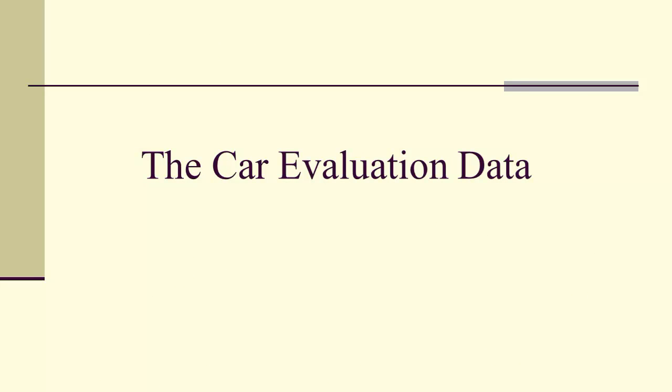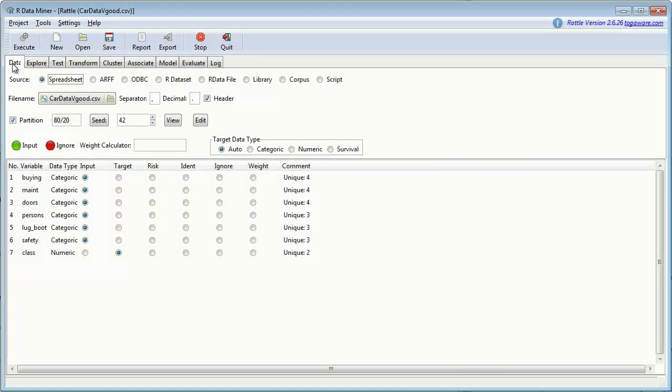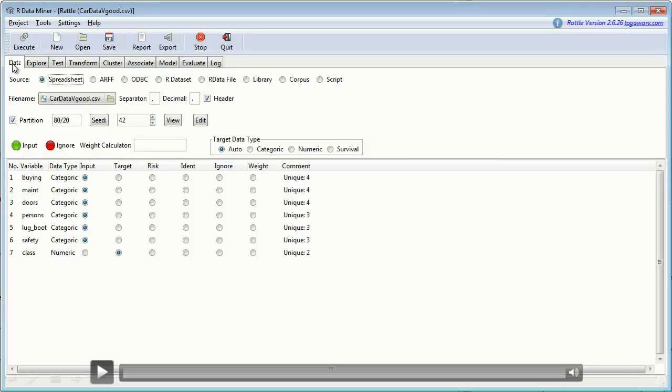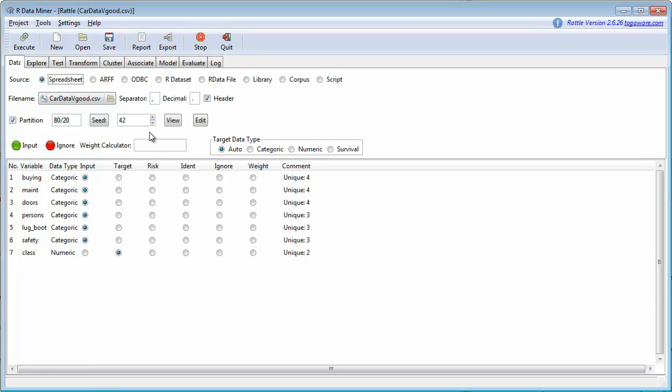Now let's look at the car evaluation data. One thing about the car evaluation data was that there were very few cars labeled as very good. We're going to look again. This is RATTLE, and we're going to use RATTLE to look at the metric, the evaluation of the decision tree for the car evaluation data. We're going to use another 80-20 split. Execute that.